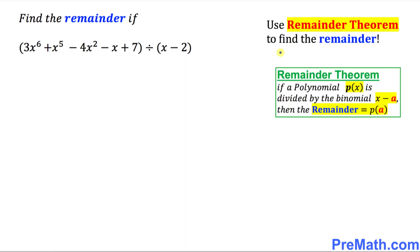The easiest method to find the remainder is the Remainder Theorem. The Remainder Theorem states: if a polynomial p(x) is divided by the binomial (x - a), then the remainder equals p(a).